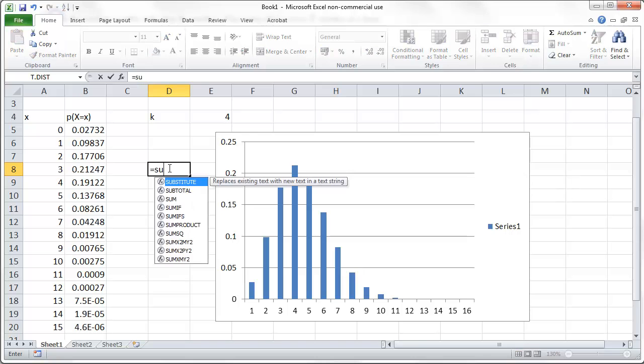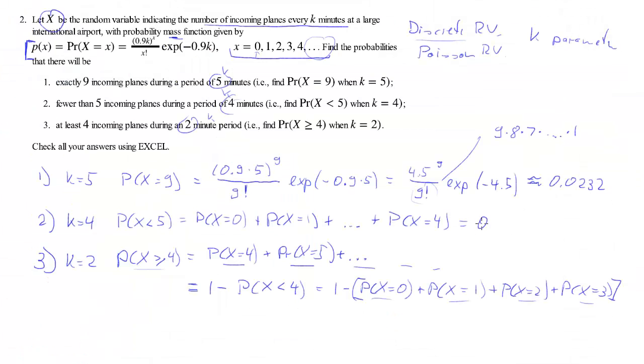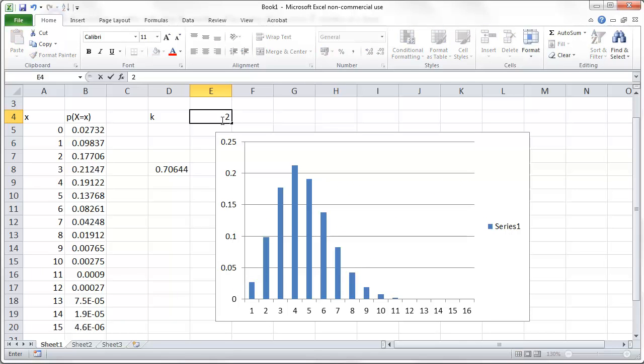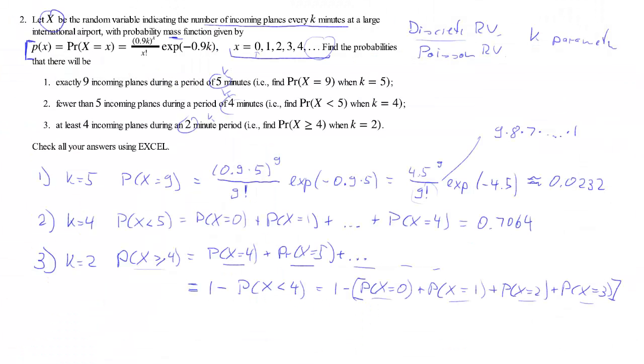Now to answer our question, what we needed was we merely needed to sum up the probabilities from 0 to 4. And the result is 0.7064. So here the result is 0.7064. And what about the last question? k changed to 2 and we wanted to calculate 1 minus the sum of the probabilities for outcome 0 to 3. So we get 0.1087. So here the outcome is 0.1087. That is it.